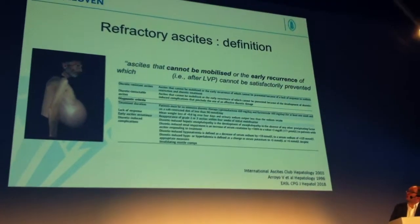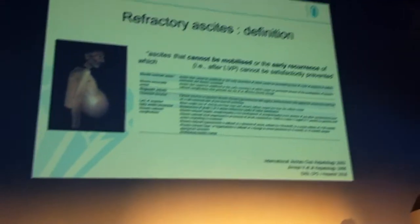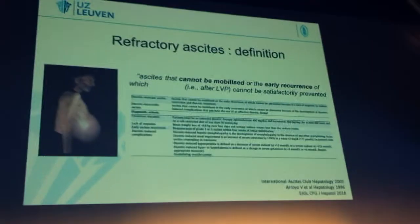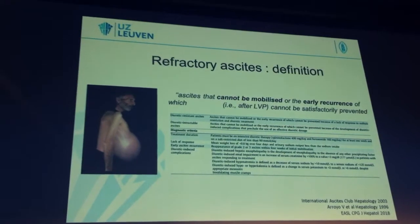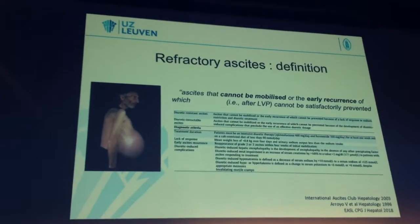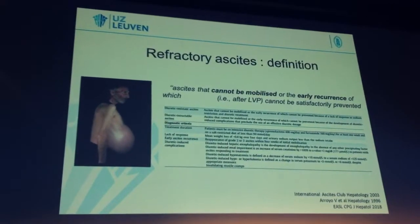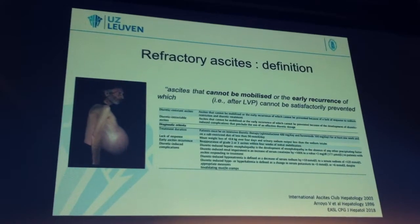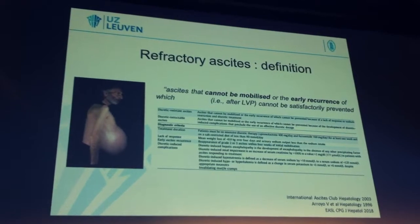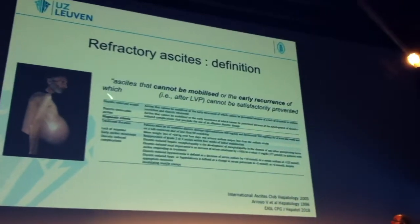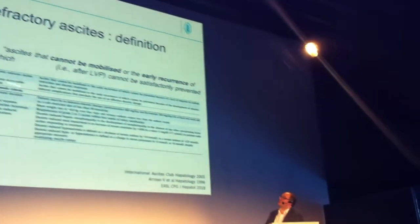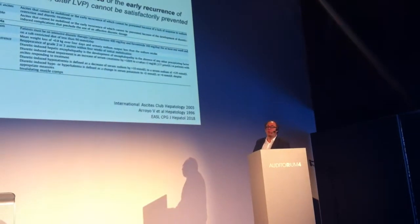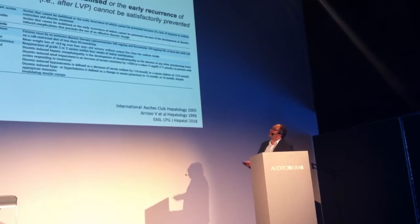Refractory ascites is ascites that cannot be mobilized, or in which early recurrence occurs after paracentesis and cannot be prevented with therapeutic strategies. We consider two situations: diuretic-resistant ascites, in which ascites cannot be mobilized despite having intensive diuretic therapy.